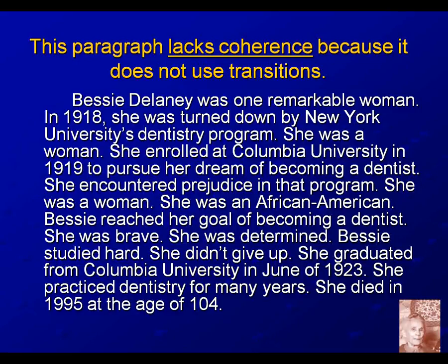A simple one that comes to mind — not the only possible one — is the word 'because.' In 1918, she was turned down by NYU's dentistry program because she was a woman. Now I know what that second detail has to do with the first one. I know how they logically connect. That ideally is what transitions do. They don't just number the details — firstly, secondly, thirdly, lastly — they connect them logically. We would say that second detail is in a cause-and-effect relationship with the first one. Her being a woman was the cause of NYU turning her down; NYU turning her down is the effect of her being a woman.